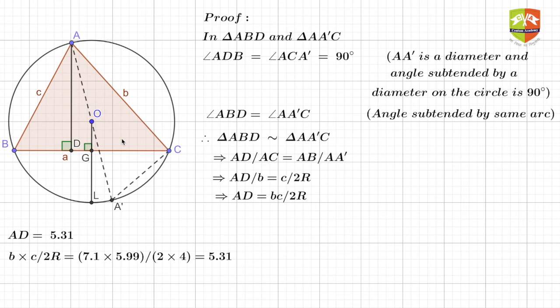So hence AD upon AC will be equal to AB upon AA'. That's what I have written here, right? Corresponding parts of similar triangles. So AD is written as is, but AC was b, you can see. AC is b. Similarly, AB was c, and AA' clearly is the diameter, so 2R.